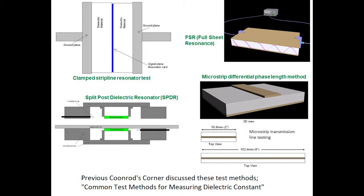The pictures we're looking at now: in the upper left is the clamp strip line test, bottom left is the split post dielectric resonator, upper right is the FSR full sheet resonance test, and then the microstrip differential phase length method. All of these were talked about in the previous video. Specifically, the clamp strip line test is what we use in our QA department to define the dielectric constant as a raw material test. The microstrip differential phase length method is a test using a circuit as a test vehicle to extract the dielectric constant.